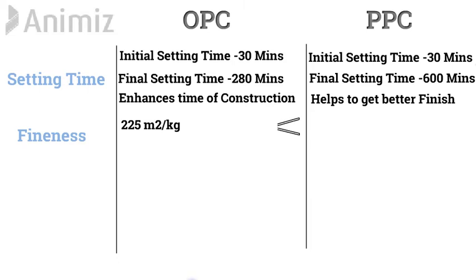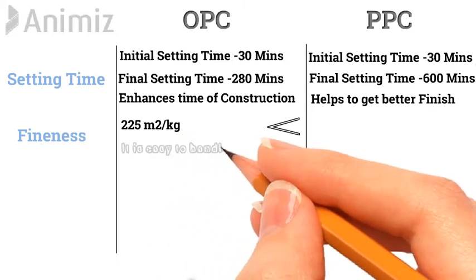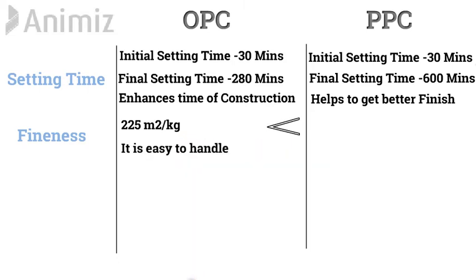Fineness: The fineness of OPC is at least 225 metres square per kg, which is lower than PPC. Hence, it is easy to handle. Whereas, the fineness of PPC is at least 300 metres square per kg, which is higher than OPC. Hence, it is difficult to handle, but it is not a major concern.